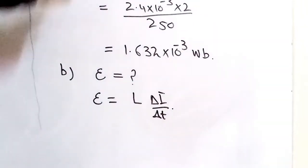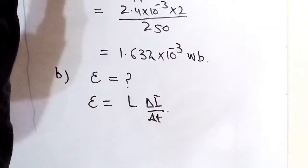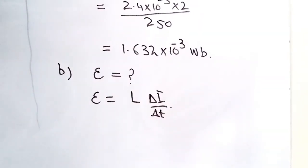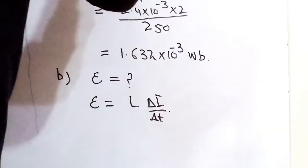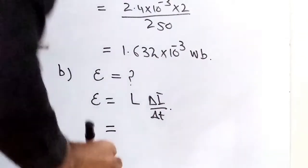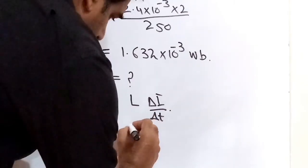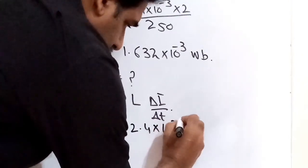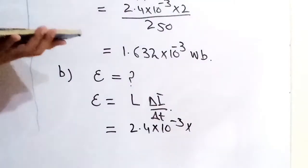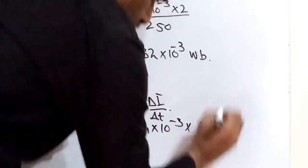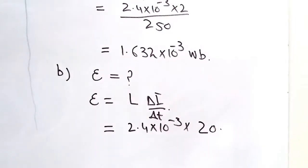Here we have L, 2.4 times 10 to the power minus 3 Henry, and delta I over delta T equals 20 ampere per second. So it is 2.4 times 10 to the power minus 3 times 20. Now we calculate it: